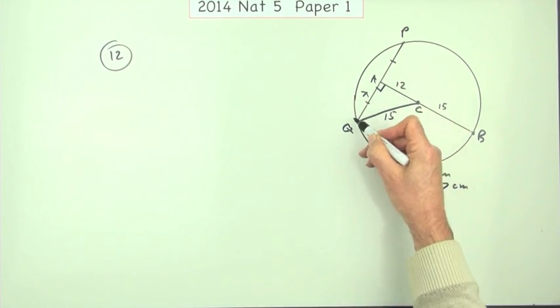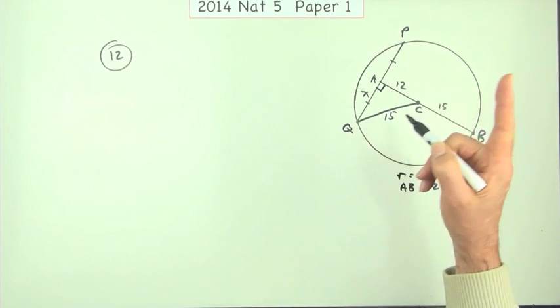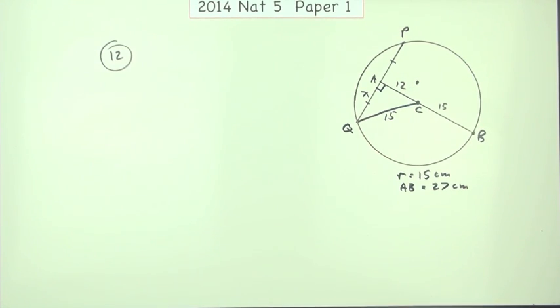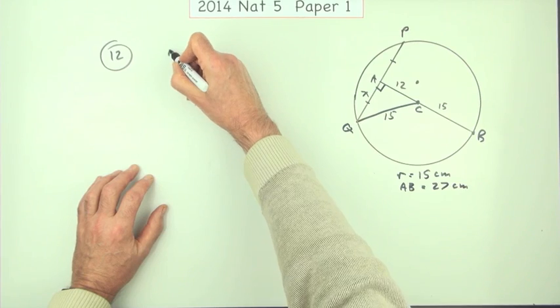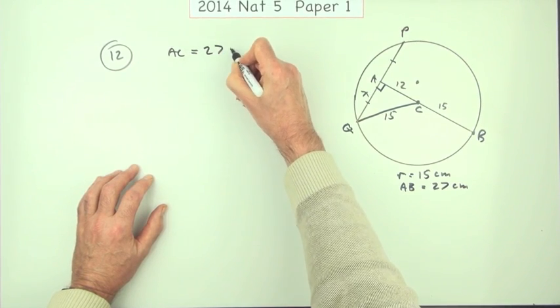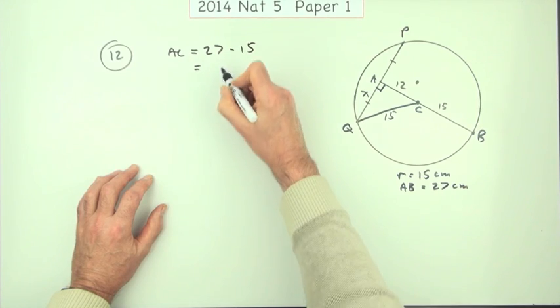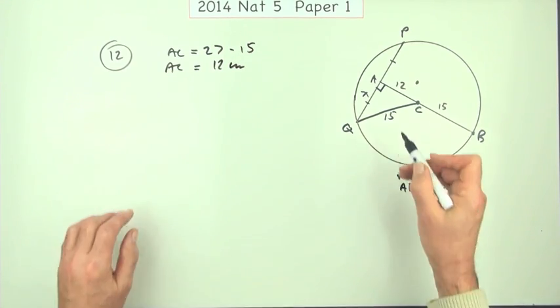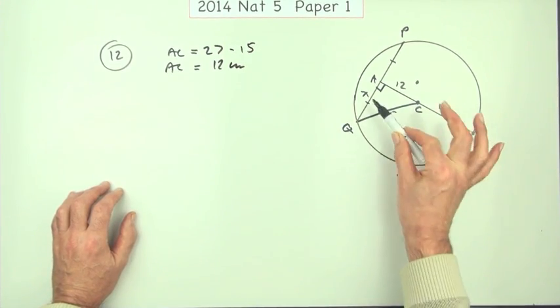And in fact, that's the first mark for having a sketch like this down, or information to that effect—having a right-angled triangle with a 12 and a 15 in it. I think if I was doing it, I may have started off by saying AC is 27 take away 15, which is 12 centimeters.